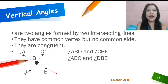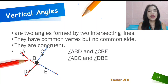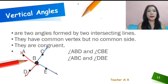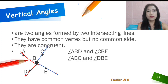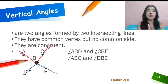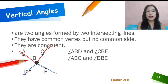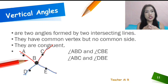We have there the angle ABD and the angle CBE. They are intersecting lines, so they are vertical angles — they have a common vertex but they don't have a common side. You could also have angle ABC and angle DBE as vertical angles, wherein they share the common vertex B but are not having a common side.